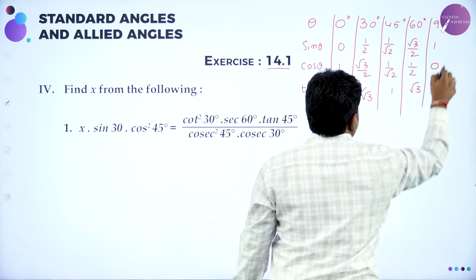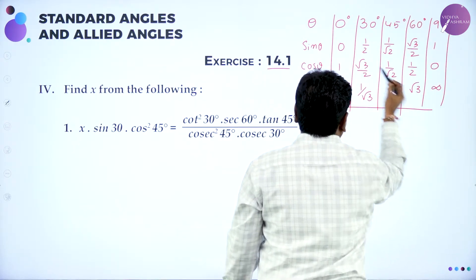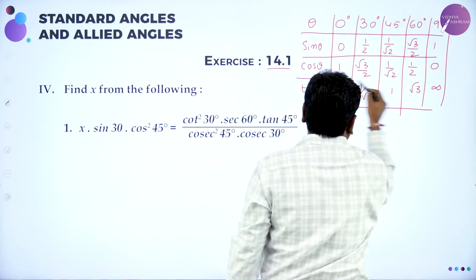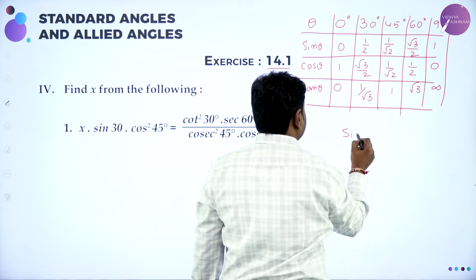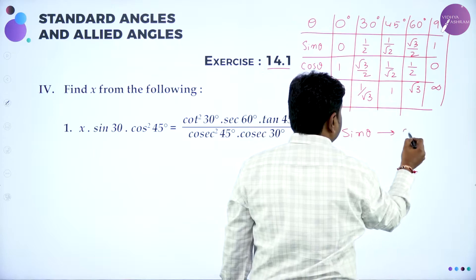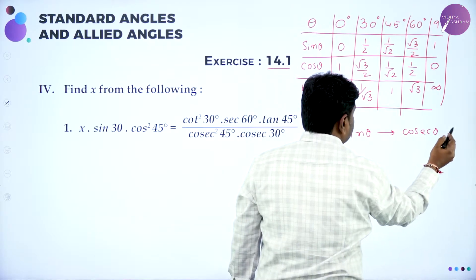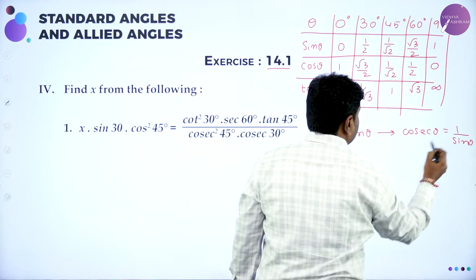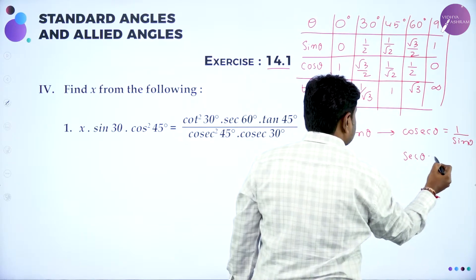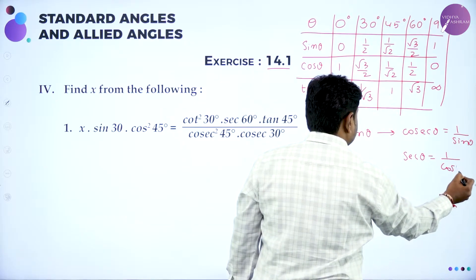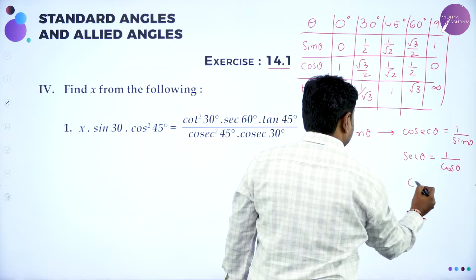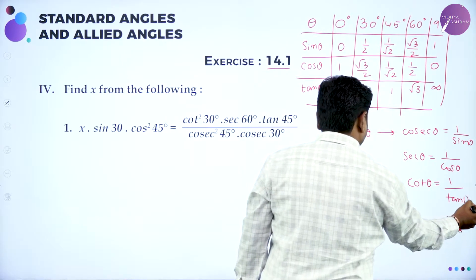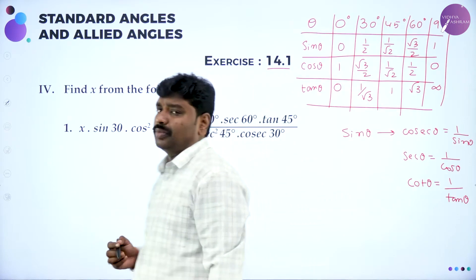Other than this, you should know the reciprocal functions. For sin θ, the reciprocal is cosecant θ, meaning cosec θ = 1/sin θ. Similarly, secant θ = 1/cos θ — reciprocal of cos is secant. And cot θ is the reciprocal of tan θ. These are the three basics you need to know to solve these kinds of problems.